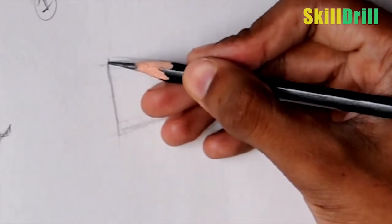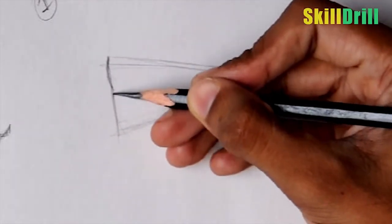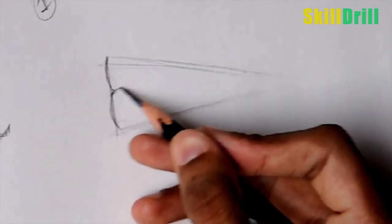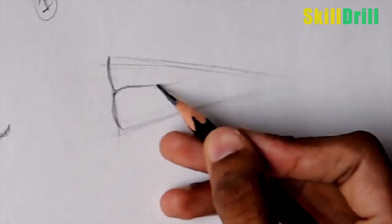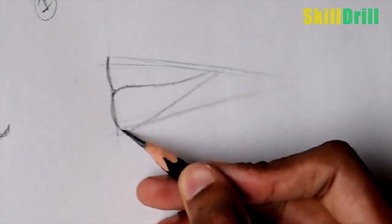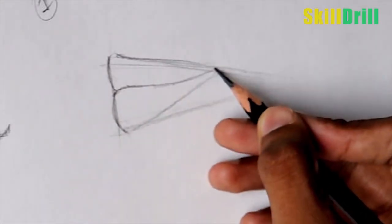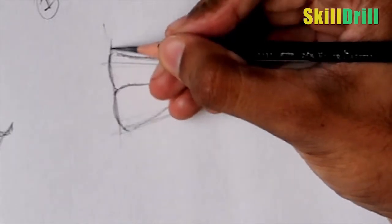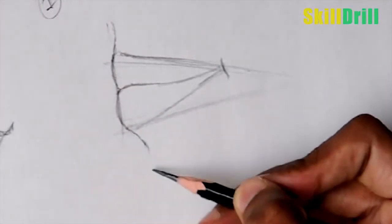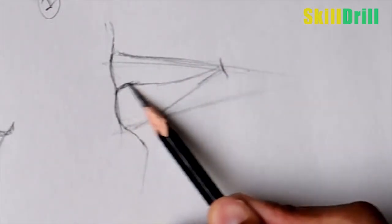After that, upper lip: make a C-curve. The lower lip: C-curve, then the S-curve. The S-curve, and this will be the chin. So this will be the lips from the side.